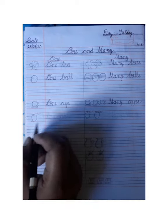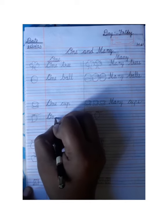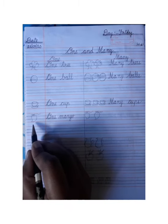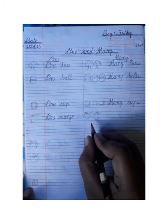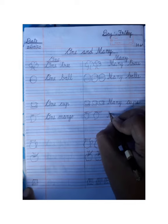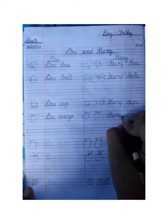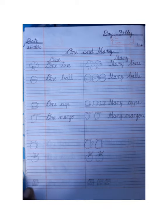This side has one mango, so we will write: One mango, M-A-N-G-O. You can see this side has one mango, that's why we write one mango. And this side has more than one mango, so we will write: Many — M-A-N-Y — mangoes, M-A-N-G-O-E-S. Many mangoes.